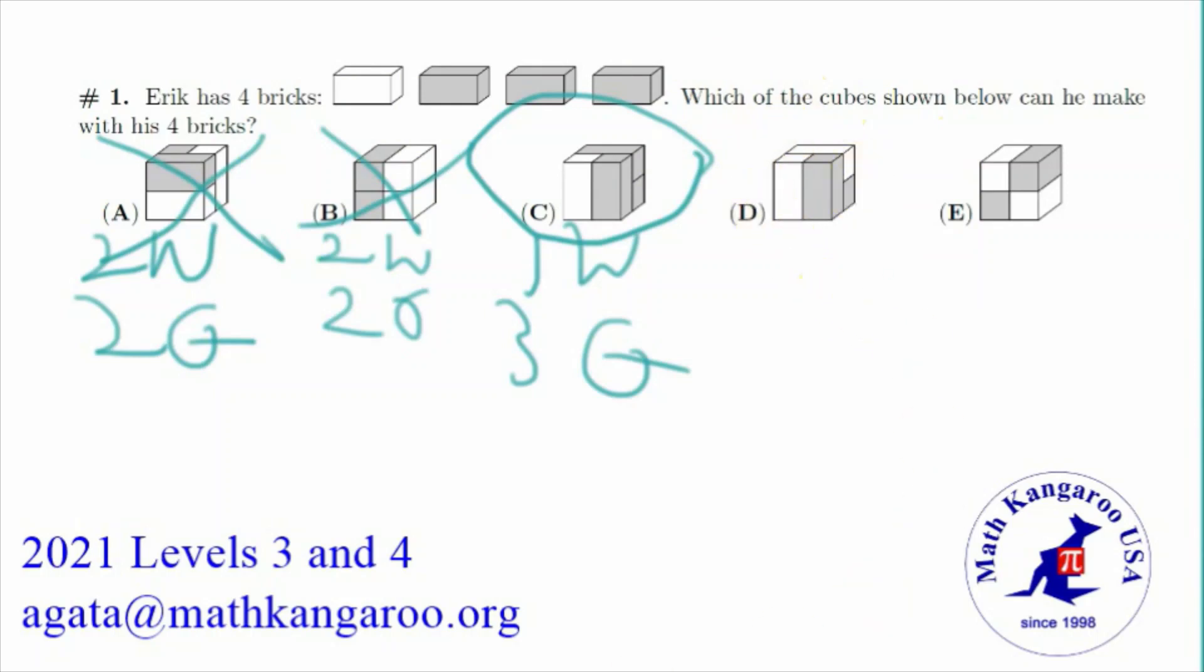Then we have D which is the exact same thing as A and B. So 2 white and 2 grey. So that is not going to work. So we are going to cross that one out.